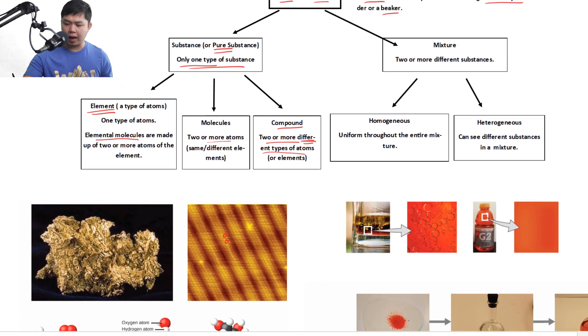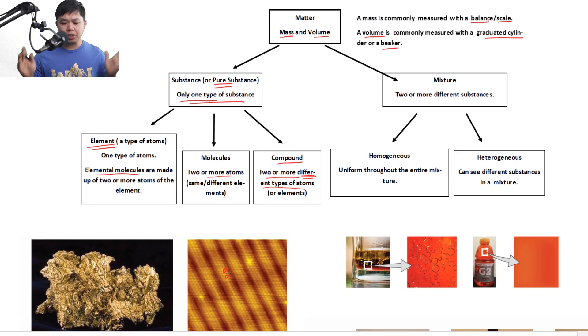Now let's go back up here and look at the other group, which is mixture. Think of the word mixture, we mix them together, physically mix them together. So basically you have two or more different substances. The key aspect over here is different substances. Here you can have a bunch of gold together, mixed together in one place, but it's only one type of substance. For mixture is two or more different substances.